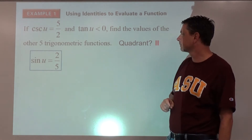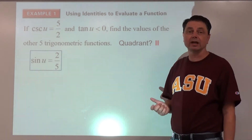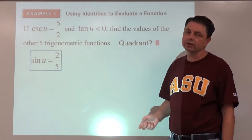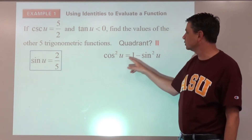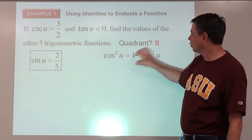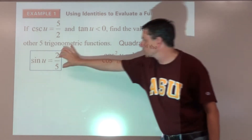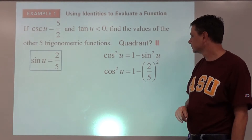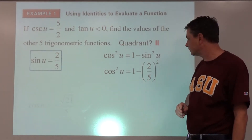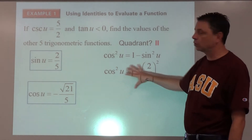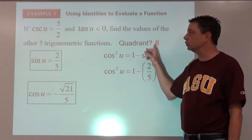With sine of u known, we go after cosine using the Pythagorean identity: cosine squared u equals one minus sine squared u. That's one minus the square of two-fifths, giving us one minus four over twenty-five, or twenty-one over twenty-five. Taking the square root of both sides, we choose the negative root because we're in quadrant two.